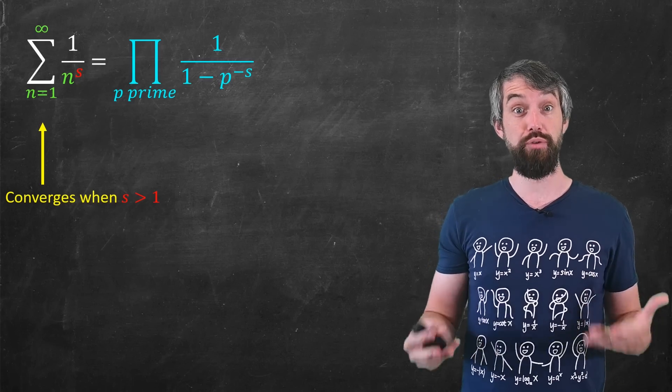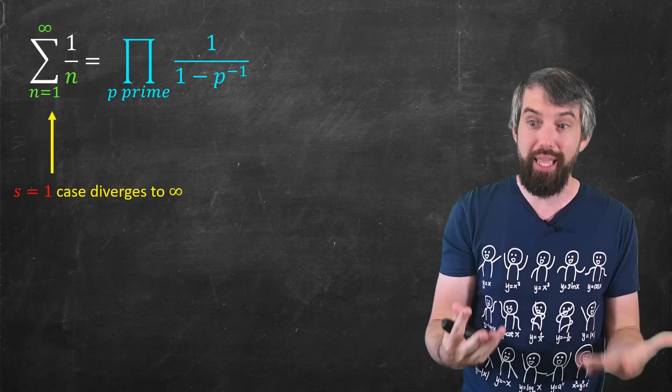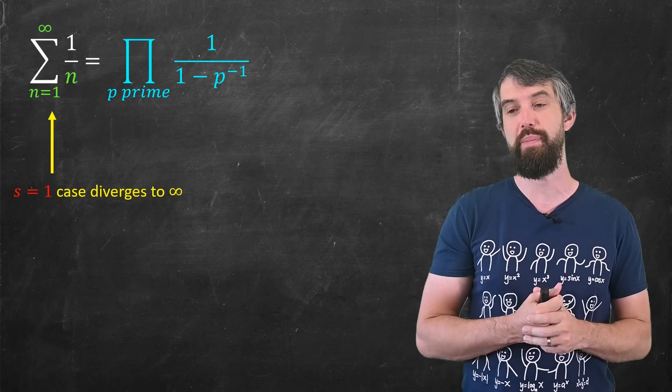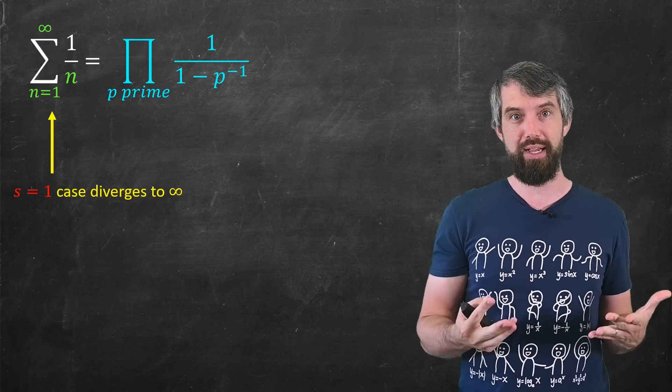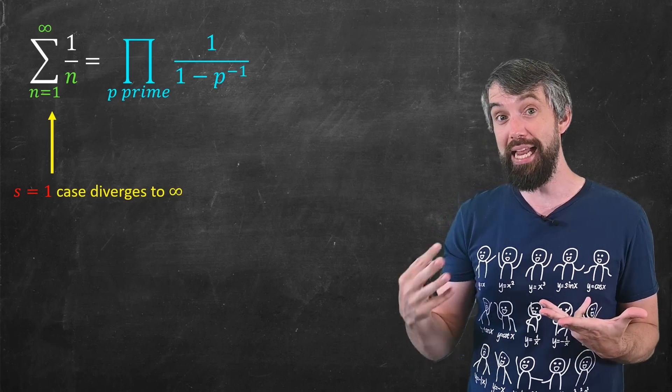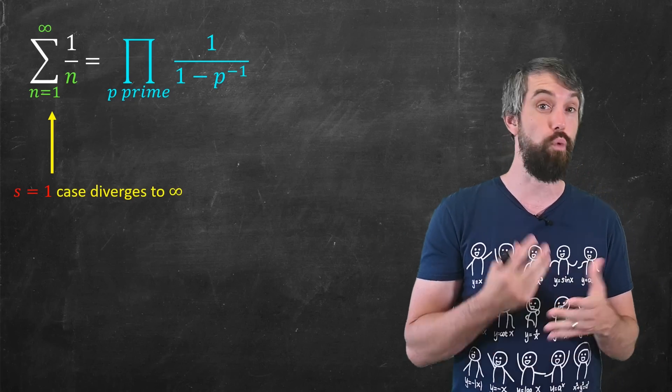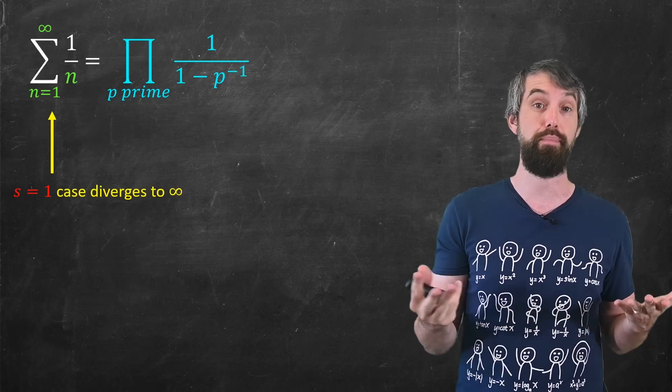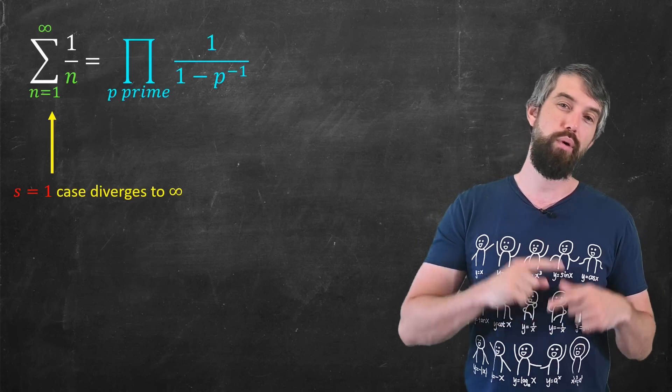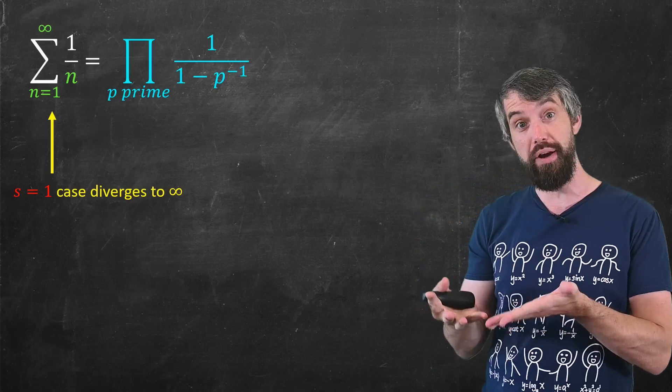To do this, I really want to imagine what's going to happen in the s equal to 1 case. And I'll remind you that if I were just to plug in s equal to 1, this is the harmonic series and it diverges. But I want to study the right hand side and see what that implies about this particular product, the product of 1 over 1 minus p to the minus 1. What happens if you happen to plug in s equal to 1? More faithfully, what we should be doing is taking the limit as s approaches 1 from above.